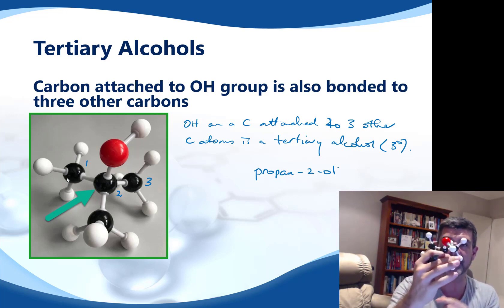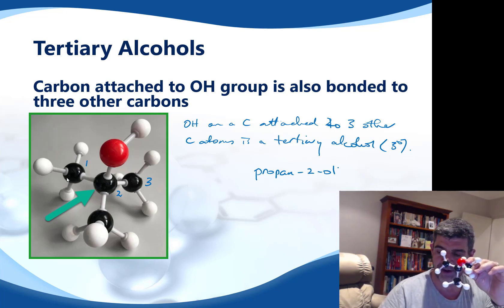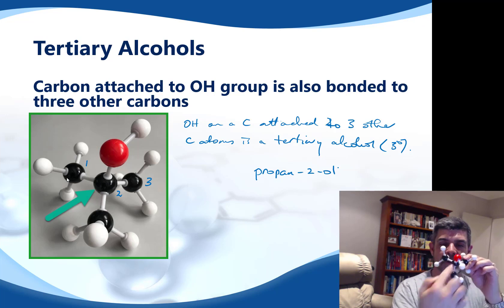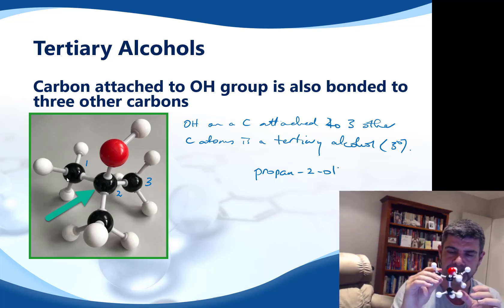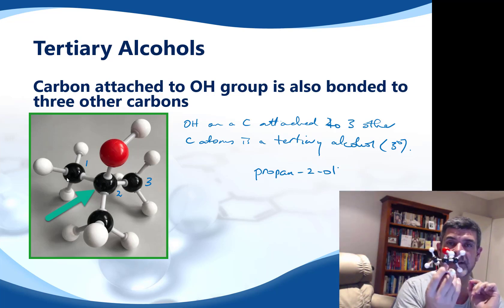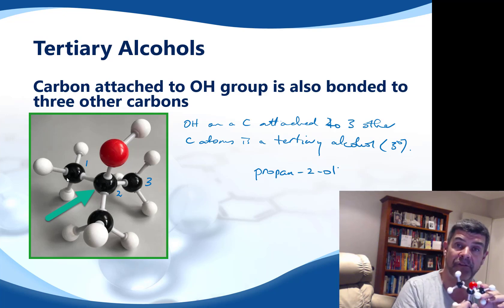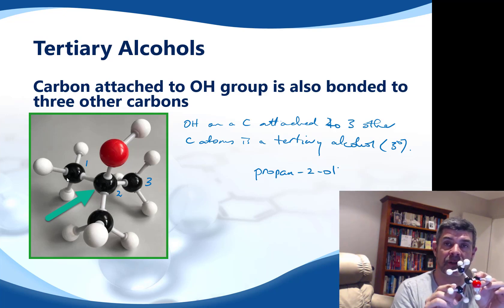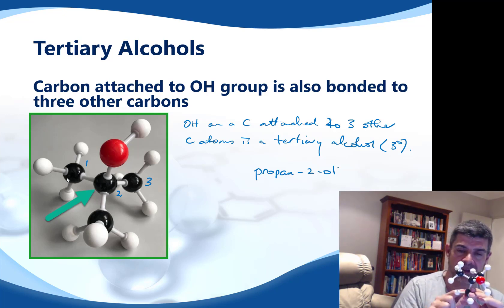Now you can orient this any way you like and make it one, two, three down here, or one, two, three down here, or one, two, three across the top here. Either way, there's one of the carbons that you're not going to count as part of the main chain. It's off the main chain. It's a side chain or a side branch. And we need to describe this as well. And it's in the position that's off the number two carbon here.